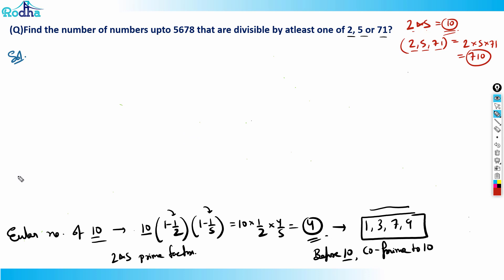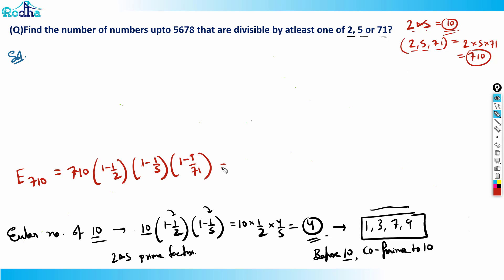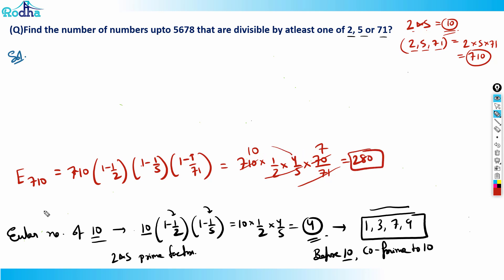This question reduces to calculating the Euler number of 710. From 710, eliminate all multiples of 2, 5, and 71. So Euler(710) = 710 × (1/2) × (4/5) × (70/71) = 280. Before 710 there are 280 numbers co-prime with 710.